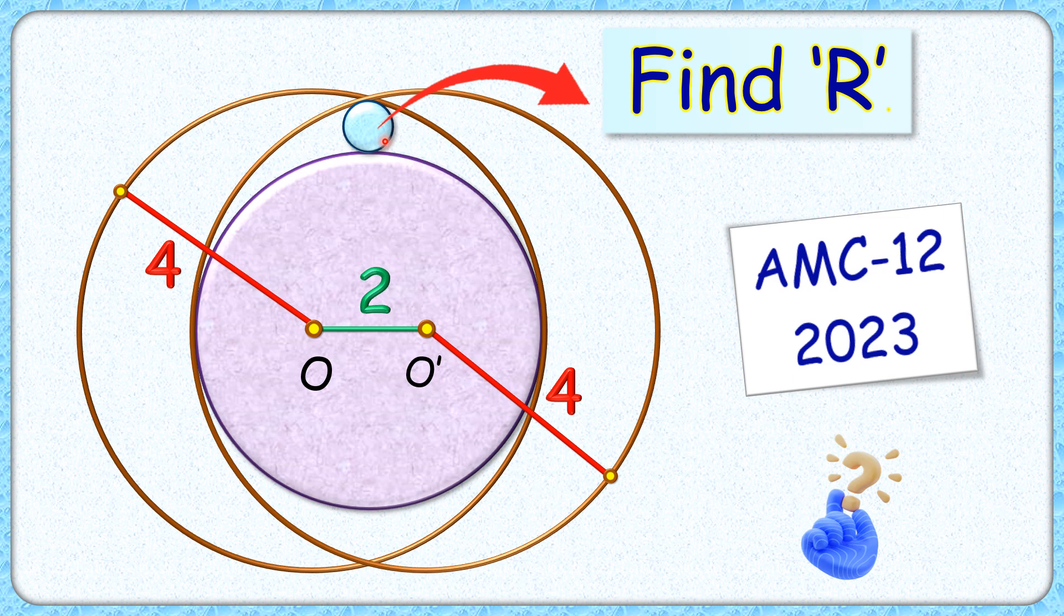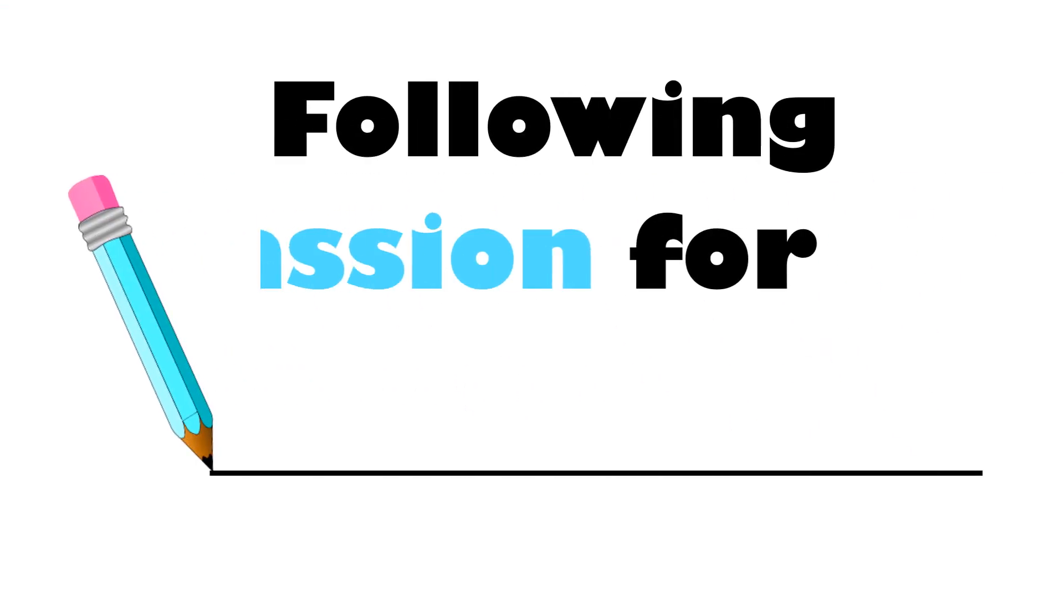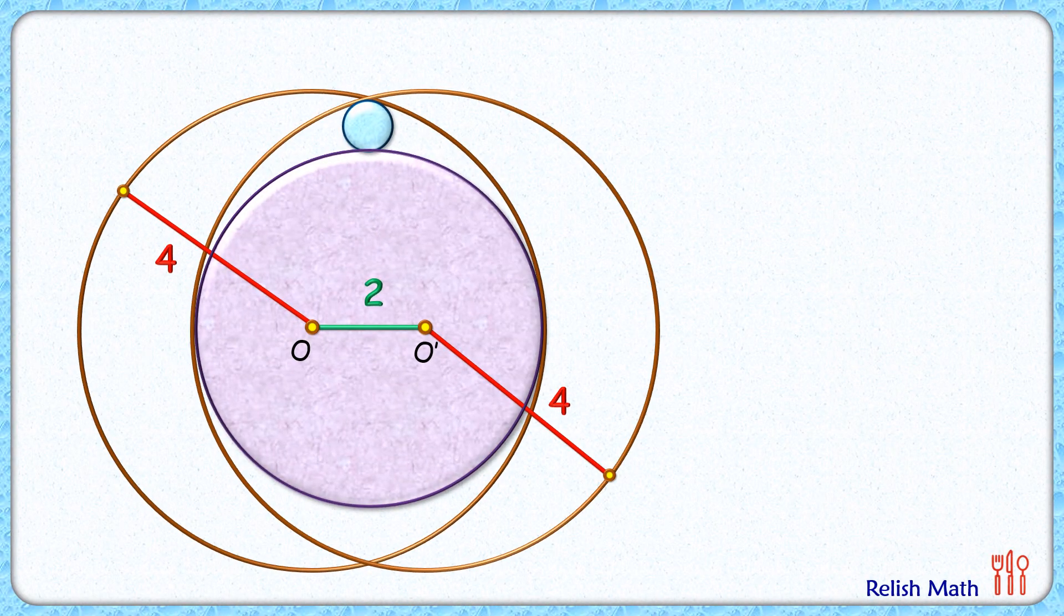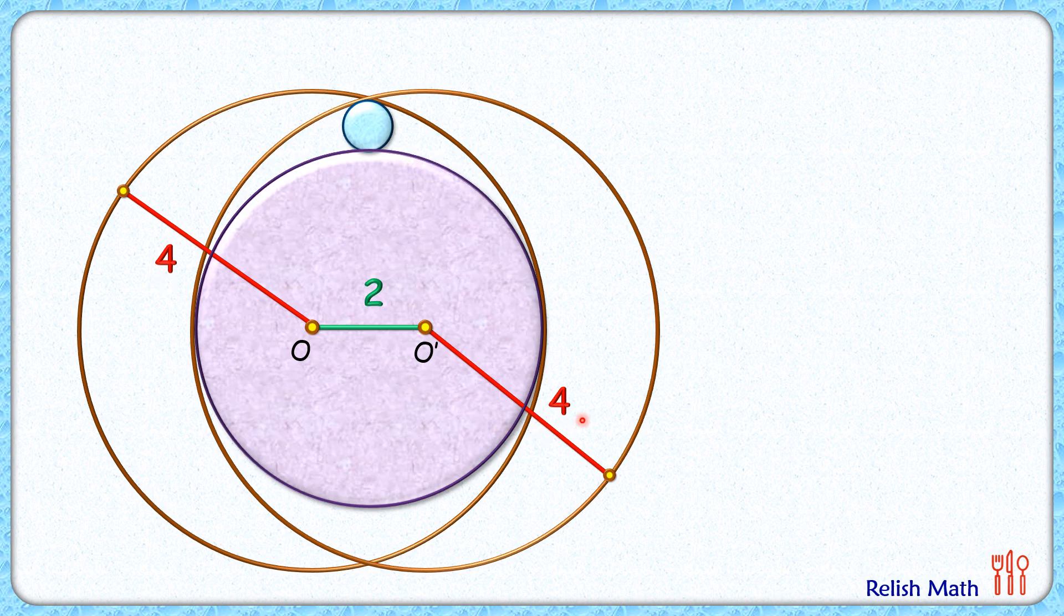The interesting part is, with this limited data, we have to find the radius of this blue circle. Let's check this simple and elegant solution. Let's first color these big circles with radius 4 cm each with yellow and blue color.